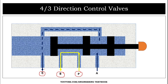The key difference between the 4 by 2 and 4 by 3 direction control valve is that the 4 by 3 valve has a closed or neutral position where the two spools block port A and port B, so there is no flow of oil. In the 4 by 2 direction control valve, there is no such blockage — the ports are always connected to each other.